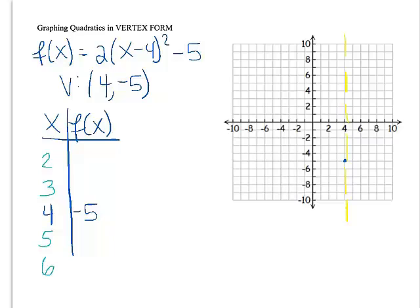So let's think, if I plug in 3, if I substitute x in for 3, I get 3 minus 4, which is negative 1, squared is 1, times 2 is 2, minus 5 is negative 3. So now I have the point 3, negative 3, and 5, negative 3.